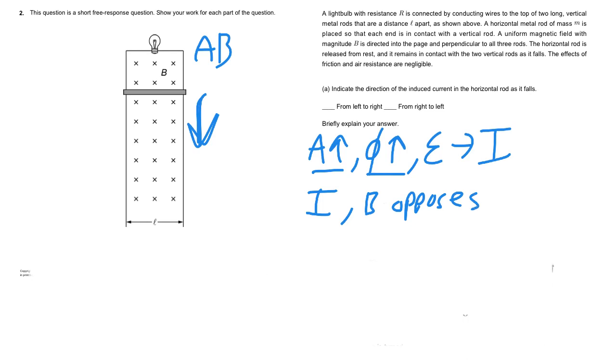So if we have flux that's increasing, we want a B field that opposes this increase. In this case the B field right now you can see is coming out of the page, so that means the new B field should go into the page.